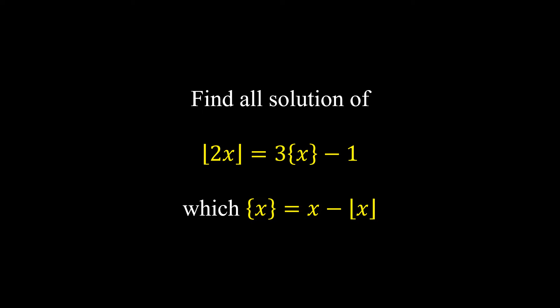Hello everyone. Today we are going to find all the solutions of floor(2x) = 3·{x} - 1, where {x} denotes the fractional part of x, defined as x minus floor(x). The idea to solve this equation is pretty simple: as we can see, the left-hand side is an integer, so the right-hand side must also be an integer. Let me show you how it is done.